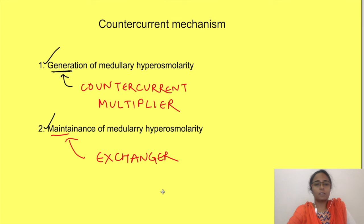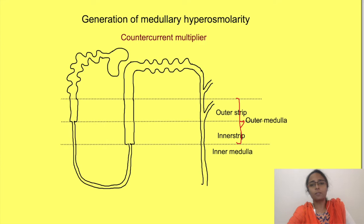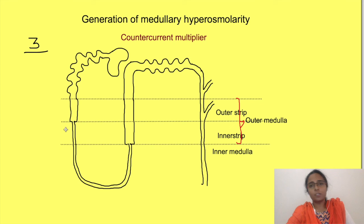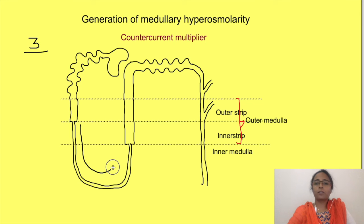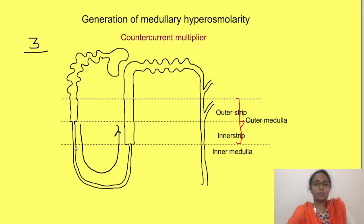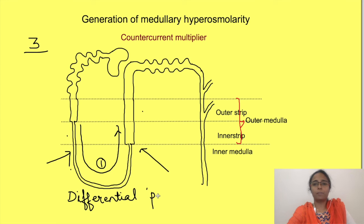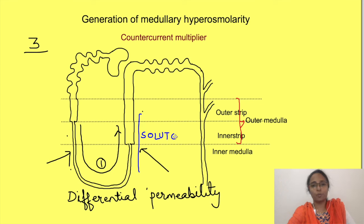First we will discuss generation of the gradient — the counter-current multiplier. There are three requirements for generation of this hyperosmolar gradient. First, the flow of fluid in the nephron should occur in closely parallel tubes and in opposite directions — which is the case in the loop of Henle. Second, both sides of the nephron should have differential permeability: the ascending limb is permeable to solutes only, and the descending limb is permeable to water only.